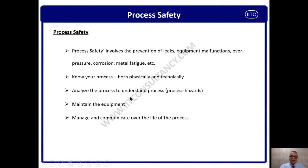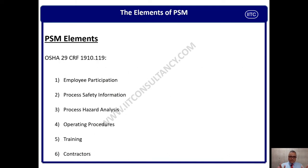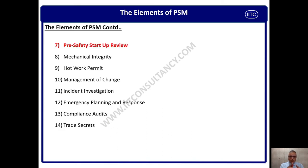One element is to analyze process hazards — this is PHA, process hazard analysis. There is a dedicated presentation for PHA on the IITC channel — please search 'IITC PHA' for detailed information. We also deal with maintenance, because maintenance covers reliability, availability, and maintainability, and we must manage the complete life cycle of the process safety management system. All 14 modules are published on the IITC channel. Now we are focusing on pre-startup safety review, which is element number 7, highlighted in the module list.